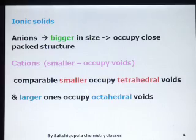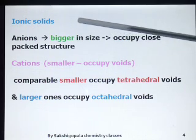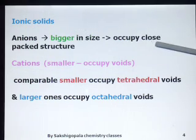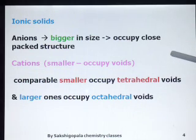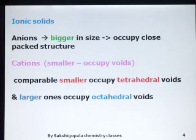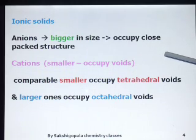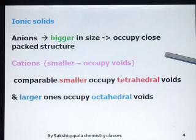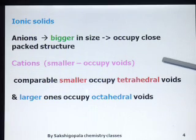Let's begin our class. First of all, ionic solid is made up of ions. The ionic bond is formed by the transfer of electrons. So ionic solids have cations and anions. Usually cations lose electrons and obviously their size is smaller when comparing with anions. Anions, due to the gain of electrons, are bigger in size.